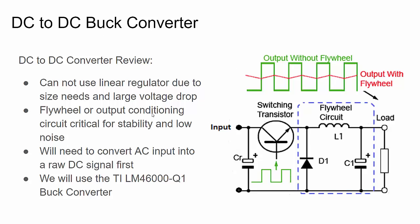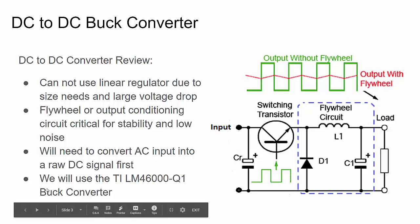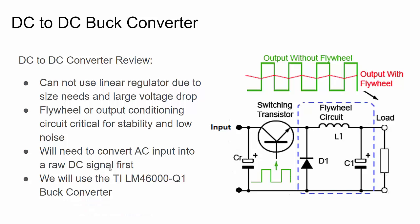In my designs I use linear regulators downstream, but to handle this input-to-output voltage range, a linear regulator would just get too hot. Of course, we have AC on the input, so we need to convert that to raw DC, and we'll have some protection and noise elimination features. For the heart of the design — the buck converter — I'm going to use the Texas Instruments LM46000. TI makes great power ICs: high quality, dependable, and well documented.